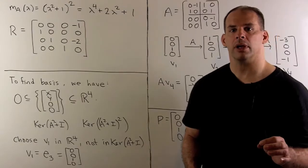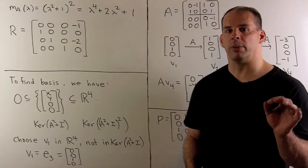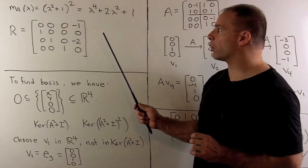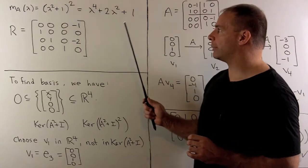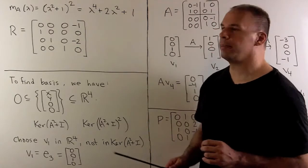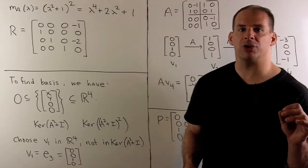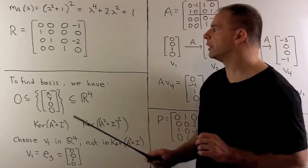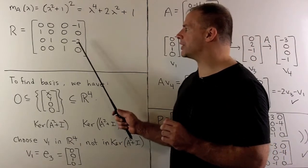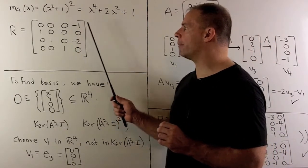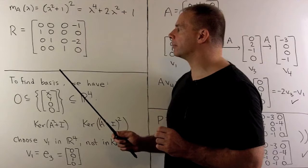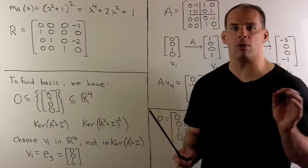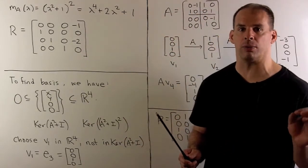The minimal polynomial for our single block is λ⁴ + 2λ² + 1. So our companion matrix has last column (reading up) 0, −2, 0, −1. That companion matrix is also our rational canonical form.